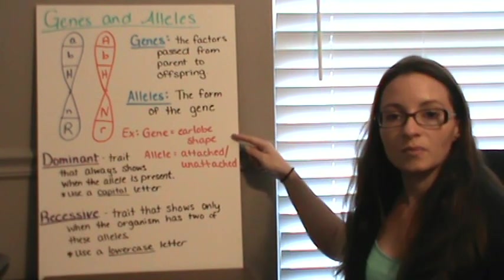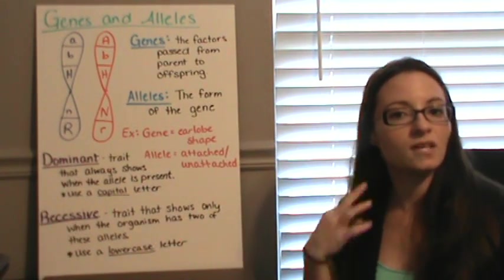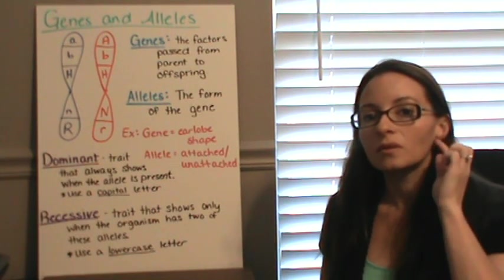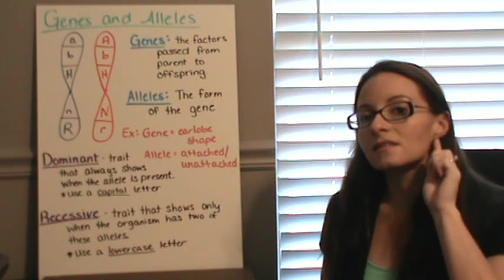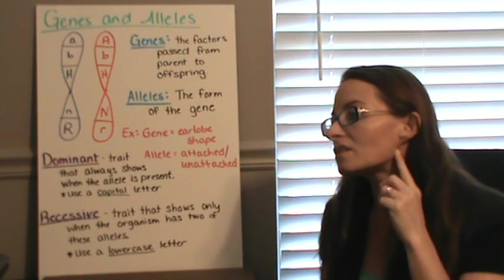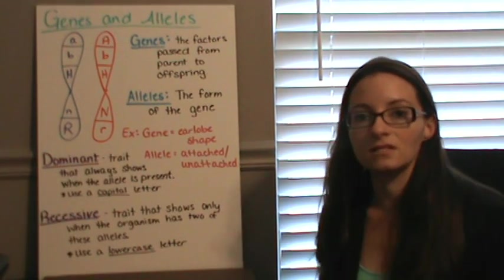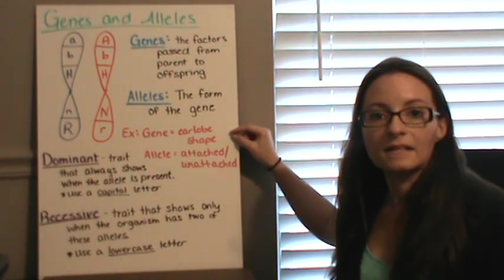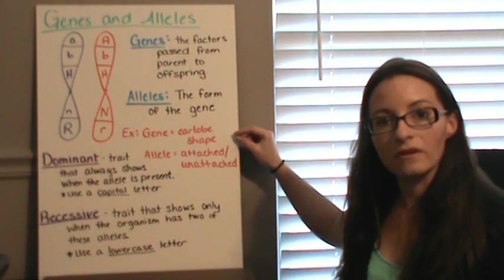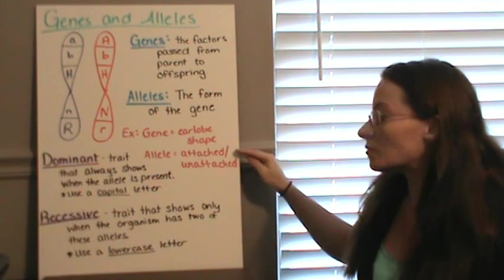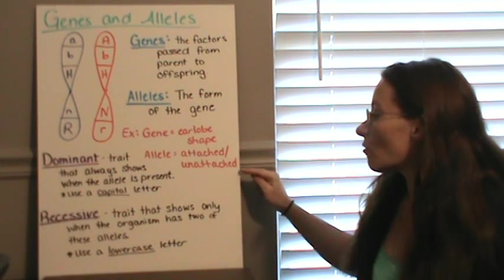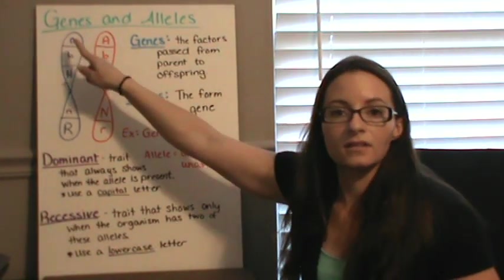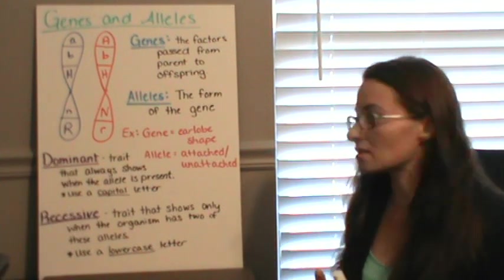So for instance, an example of this would be earlobe shape. If you take a look at your earlobes, you'll notice that some people have a little flap here that hangs down below your earlobes and you'll notice that some people have them attached. Mine actually are attached and run straight down into my neckline. So, earlobe shape is the gene and each parent will give you a different allele for that earlobe shape. It could be an attached allele for attached earlobes or it could be an unattached allele for unattached earlobes. And so that's where the different letters, forms of the letter come in, upper case and lower case.